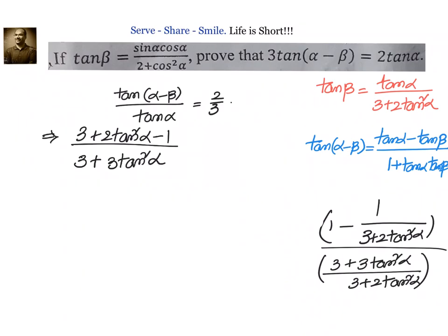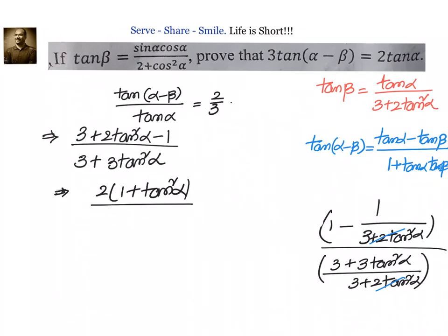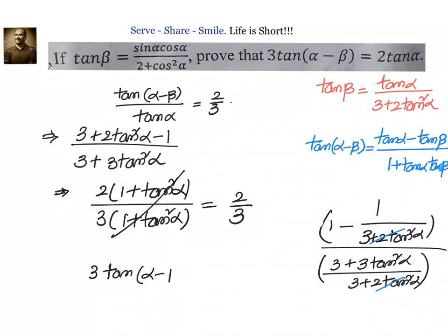When we take LCM, the denominator part gets cancelled. So 3 minus 1 equals 2, giving us 2 into 1 plus tan squared α divided by 3 into 1 plus tan squared α. We can cancel 1 plus tan squared α, which is secant squared α. When we cancel them, we get 2 by 3. That means we have proven that tan of α minus β by tan α equals 2 by 3, or equivalently, 3 into tan of α minus β equals 2 into tan α.